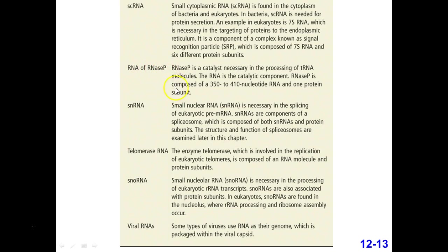RNase P is an enzyme complex necessary in making transfer RNAs — it helps in the proper formation of the transfer RNA with the amino acid. The transfer RNA is made, but then you've got to add the amino acid on; these basically load up the transfer RNAs with their amino acids. Small nuclear RNAs within the nucleus are eukaryotic and are part of a spliceosome — an enzyme that makes changes to messenger RNA, which we'll talk about later in this chapter.